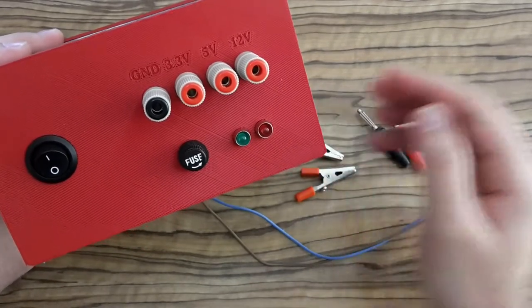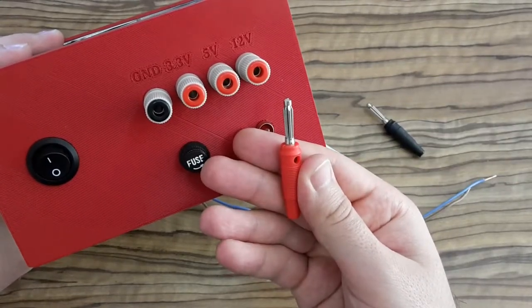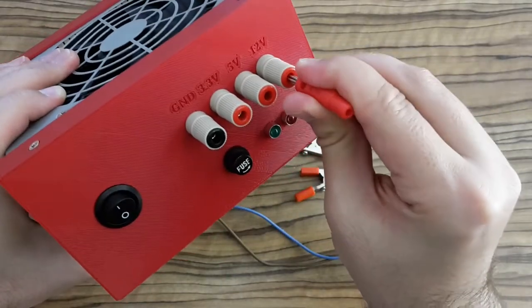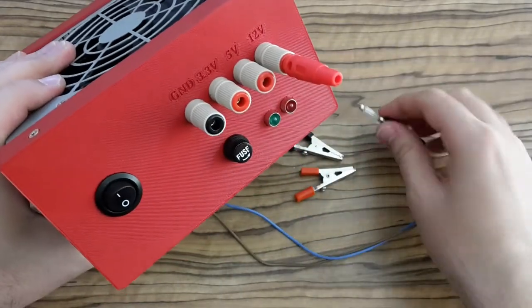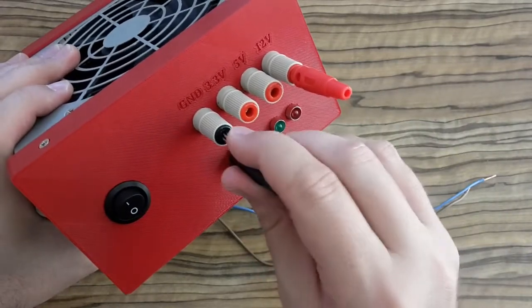At one end I'm going to use these male banana connectors. The red one will be for positive terminal and the black one for the ground.